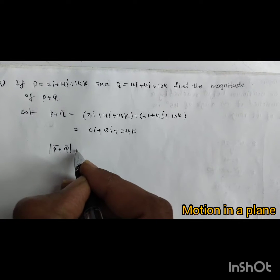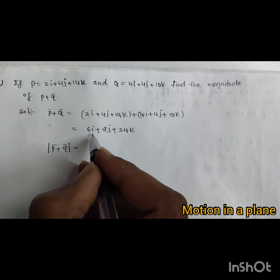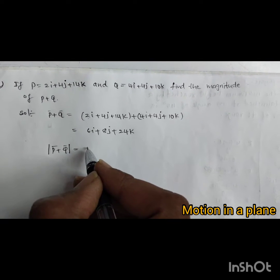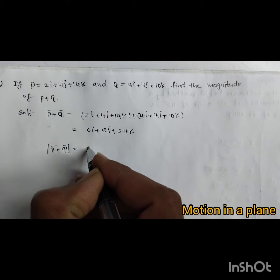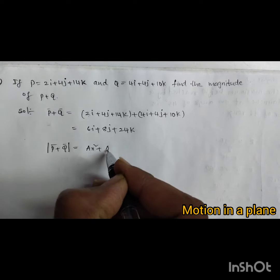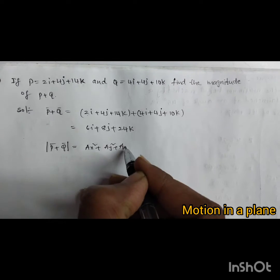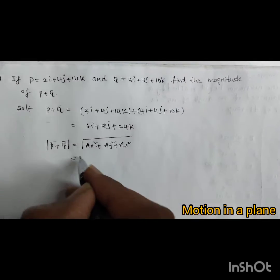Magnitude of p plus q in mod. For example, if the vector is a equals ax, ay, az, therefore magnitude of p plus q is the square root of ax square plus ay square plus az square. This is the formula.